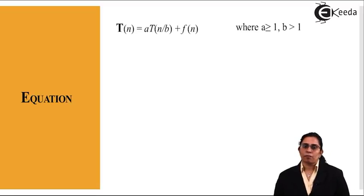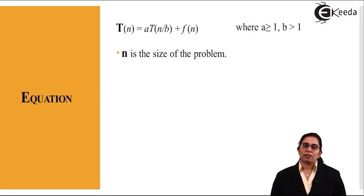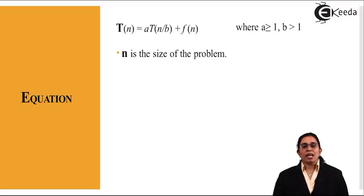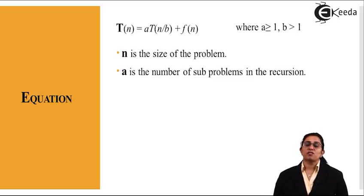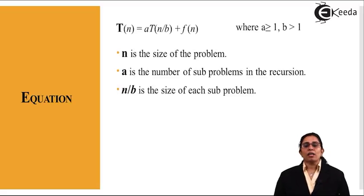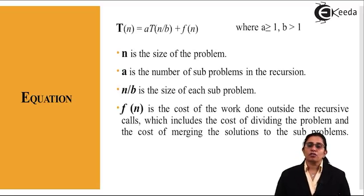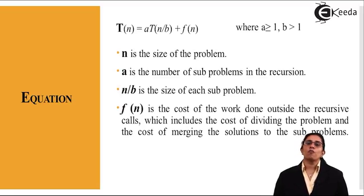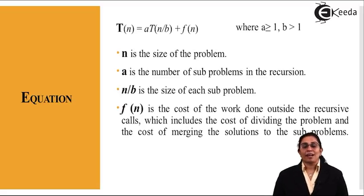In the Master's Theorem formula, n is the size of the problem. 'a' is the number of sub-problems in the recursion — that is, how many times the larger problem can be divided into sub-problems. n/b is the size of each sub-problem. f(n) includes the cost of dividing the problem and the cost of merging the solutions across the sub-problems. The Master's Theorem follows three different cases.